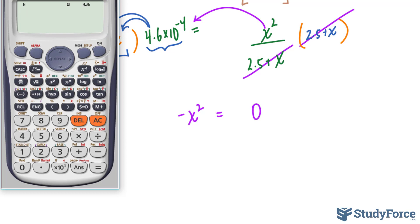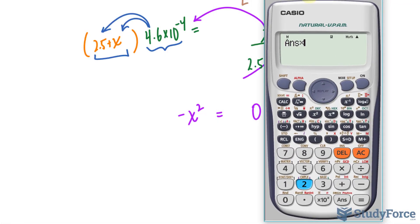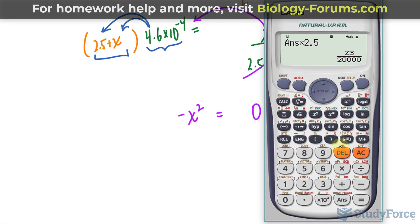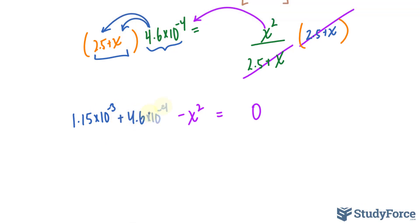So 4.6, let's use your calculator. 4.6 times 10 raised to the power of negative 4 times 2.5 gives us 1.15 times 10 to the power of negative 3. Again, this number times X is itself with the X multiplied to it, minus X squared.